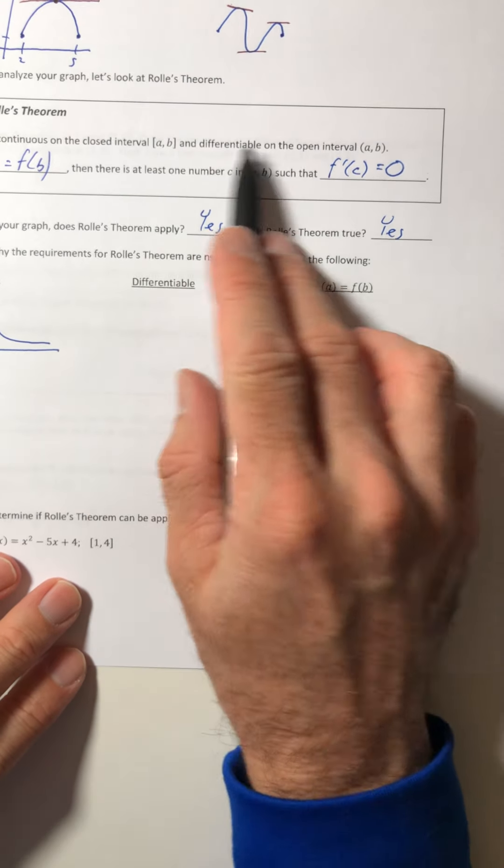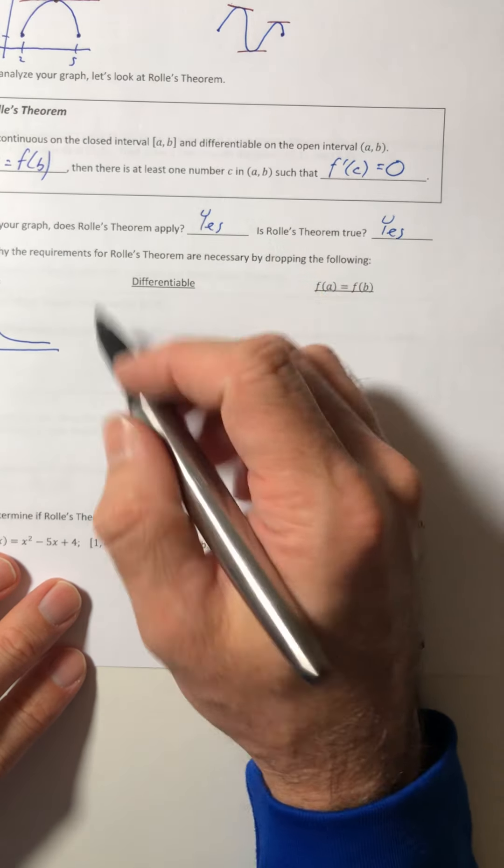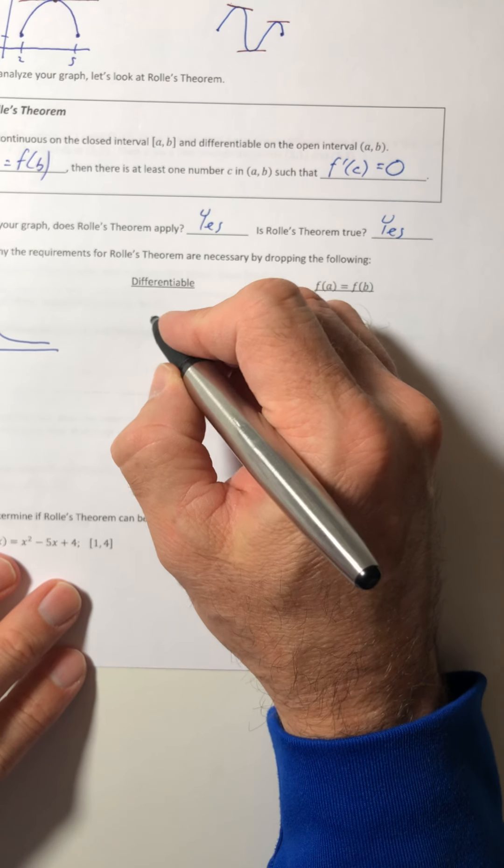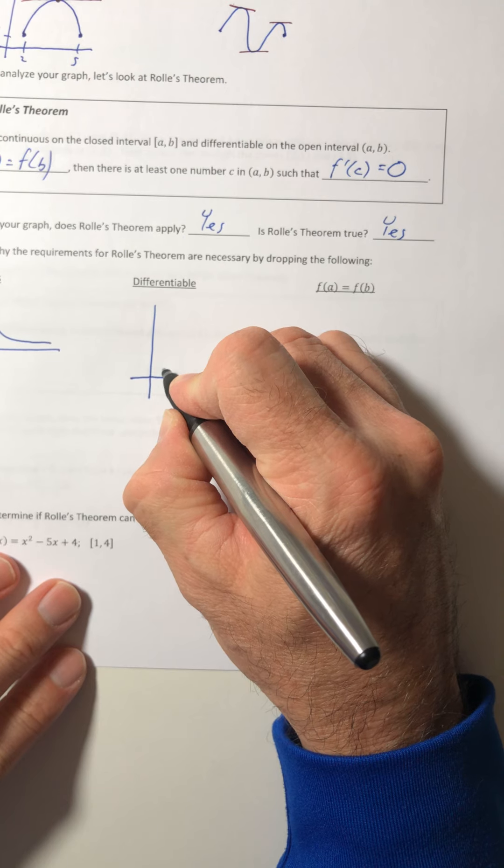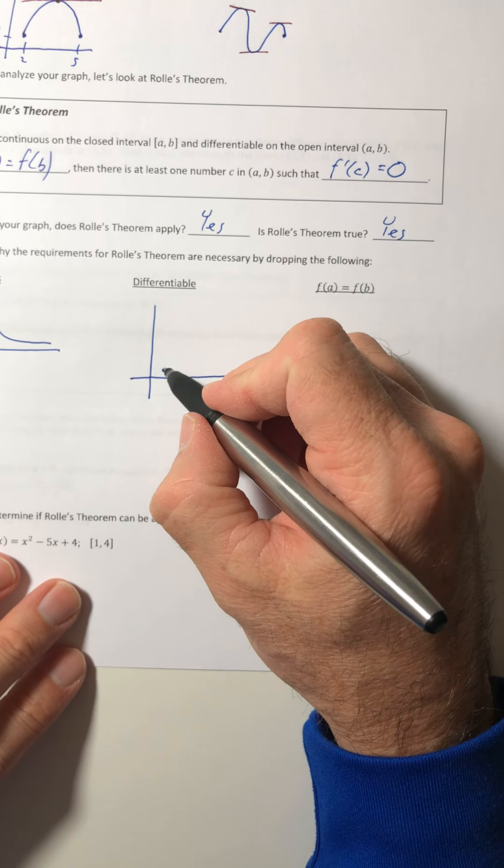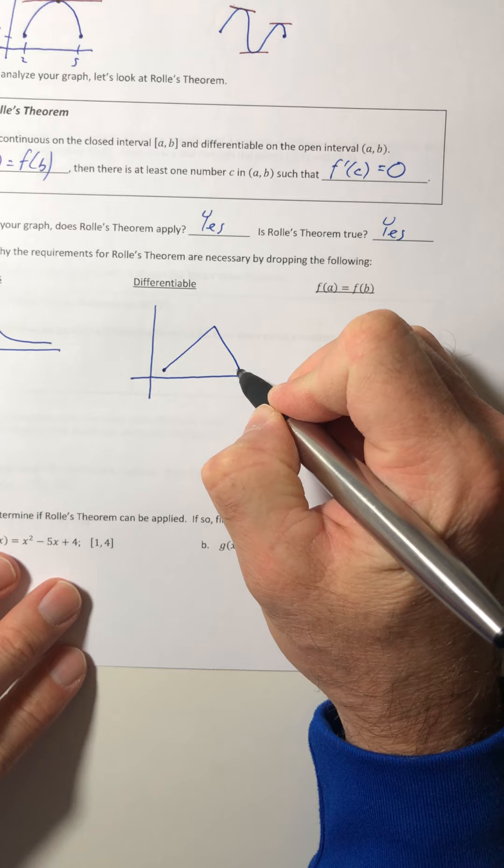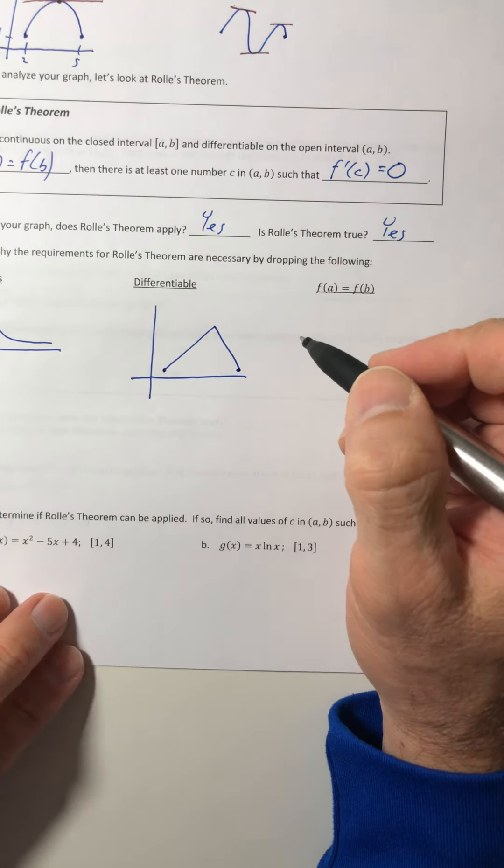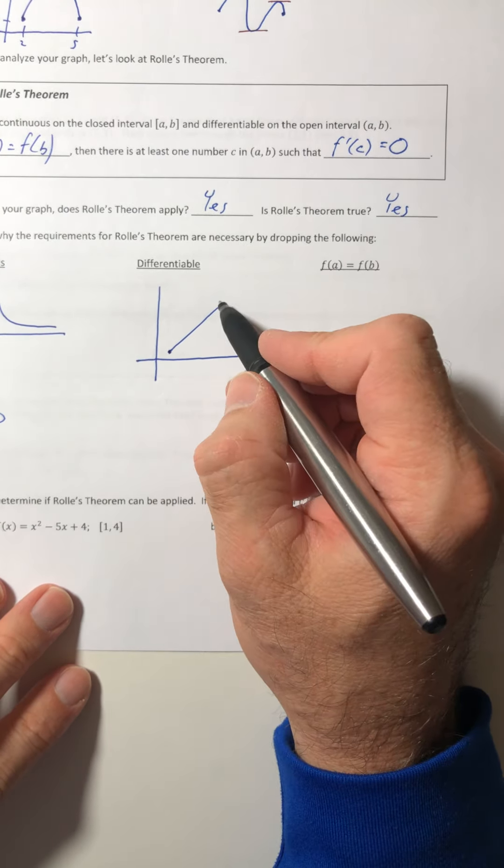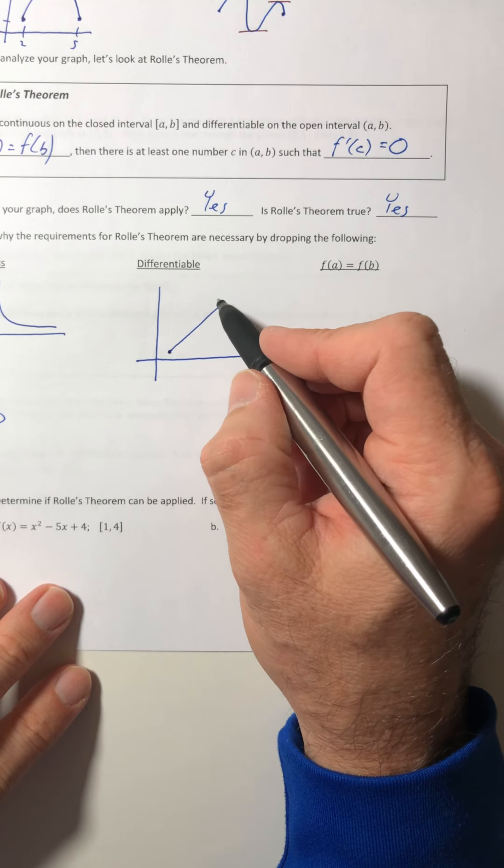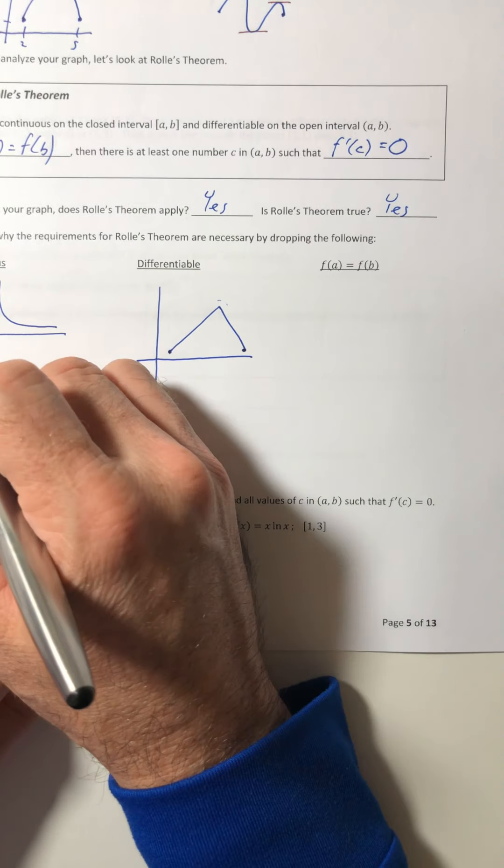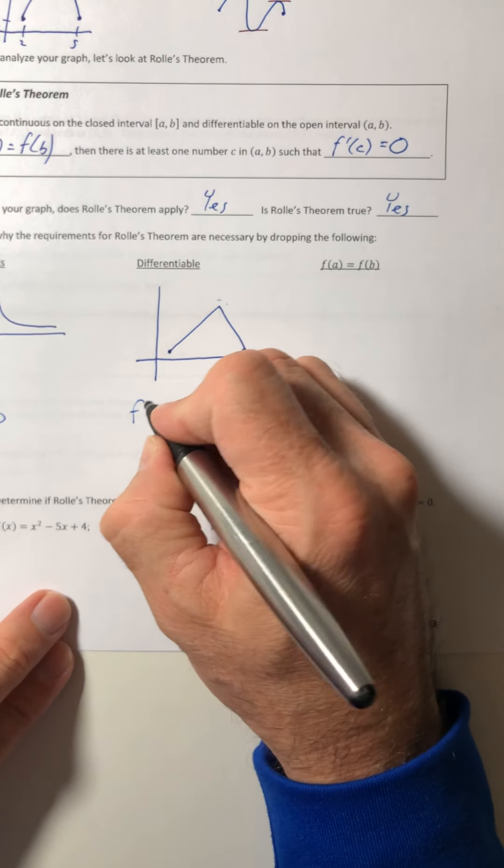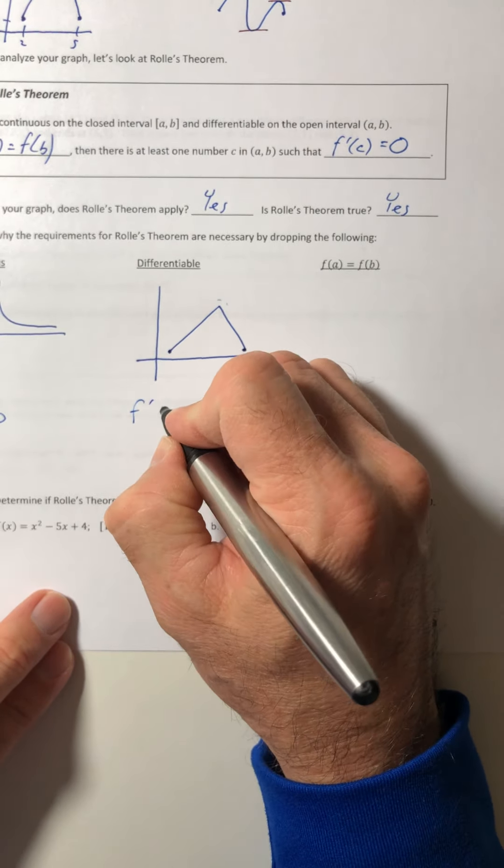All right. Now let's look at the differentiability. Let's say you dropped out differentiable, but it was continuous and f(a) equals f(b). So where it's not differentiable would be, like, at a sharp point from there to there. Well, same thing. The derivative at that top spot, it's not zero. It's undefined. I'm not sure why I put the second derivative there. So, again, the derivative is not equal to zero.